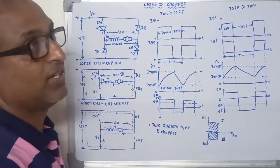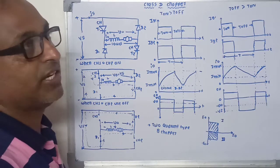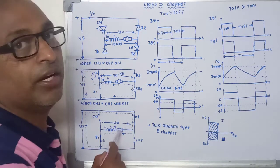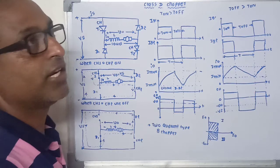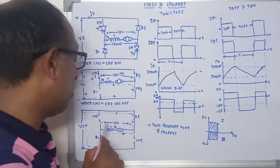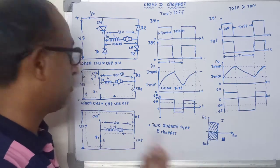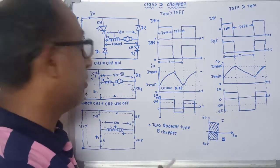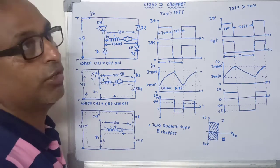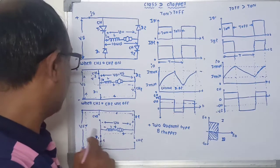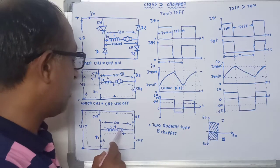When choppers CH1 and CH2 are turned off simultaneously, the current does not reduce instantaneously due to the inductive load. However, a very high reverse voltage is gradually induced across the inductor — the right terminal becomes positive and left terminal becomes negative. Due to this reverse voltage, diodes D1 and D2 turn on and start conducting, and again the load is connected to the source.